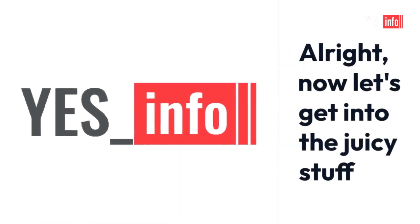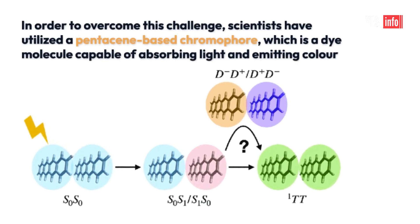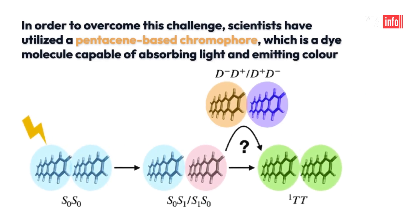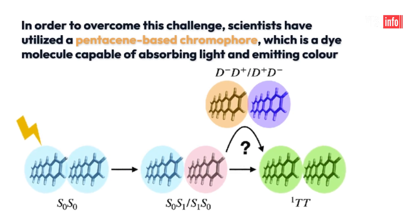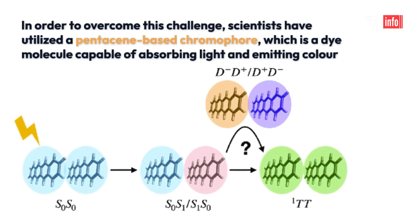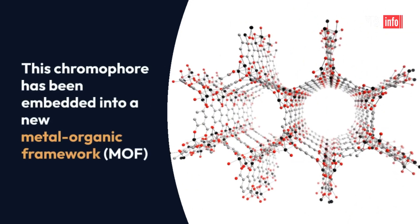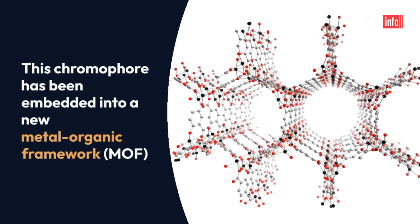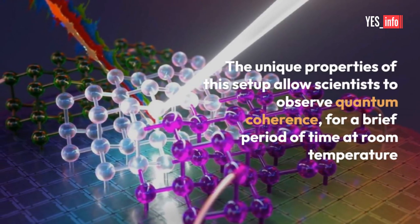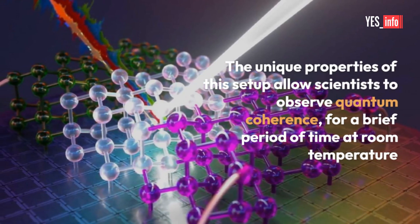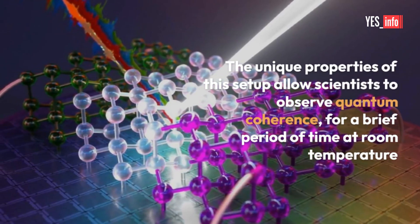Now let's get into the juicy stuff. In order to overcome this challenge, scientists have utilized a pentacene-based chromophore, which is a dye molecule capable of absorbing light and emitting color. This chromophore has been embedded into a new metal-organic framework. The unique properties of this setup allow scientists to observe quantum coherence for a brief period of time at room temperature.